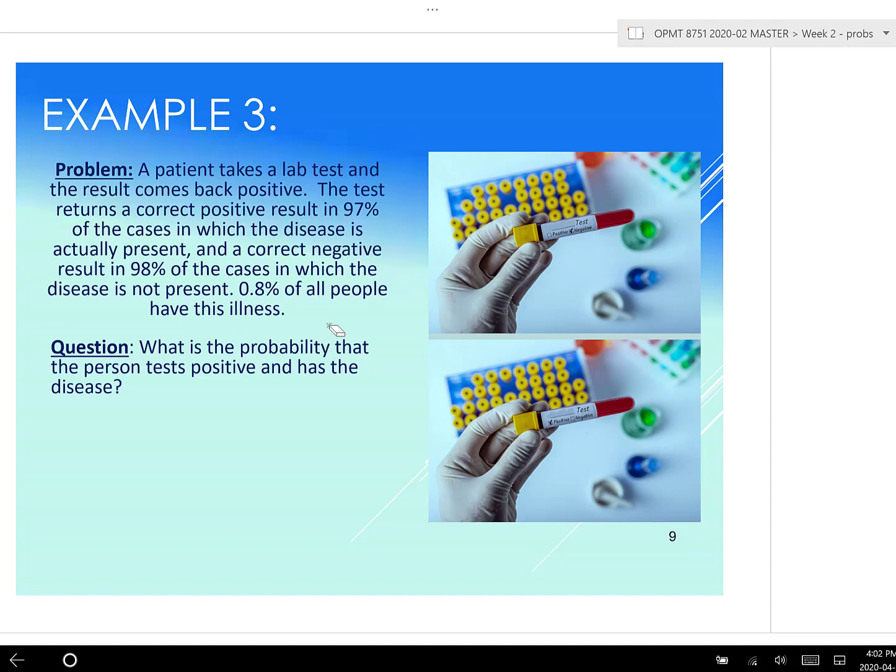Now, first question: what is the probability that a person tests positive and has the disease? So let's look at what we have. So it's a little bit trickier when we're trying to take words and put them into a probability.